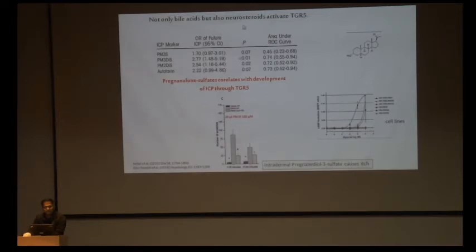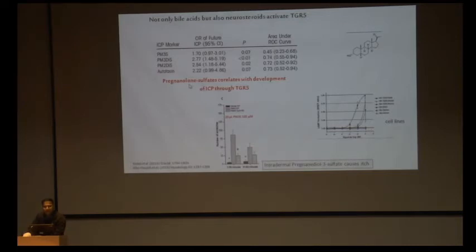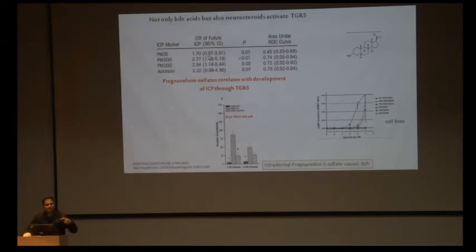Other things shown to influence the TGR5 pathway are neurosteroids, particularly pregnenolone sulfate. Serum from pregnant women with versus without cholestasis showed that higher levels of sulfated pregnenolones are associated with more likelihood of developing intrahepatic cholestasis of pregnancy. There were also elevated levels of autotoxin. Intradermal injection of serum from these pregnant patients or pregnenolone led to increased itching in mouse models.